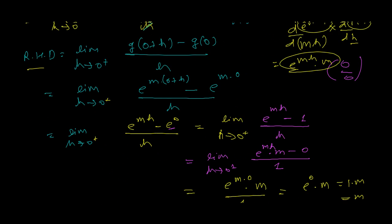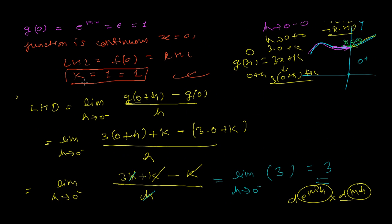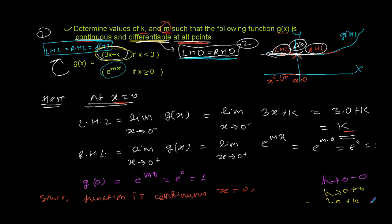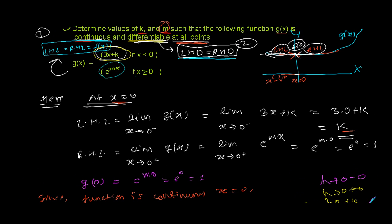Since g(x) is differentiable at x equals zero, left-hand derivative must equal right-hand derivative. Left-hand derivative is 3 and right-hand derivative is m, so m equals 3. Therefore k equals 1 and m equals 3. Whenever you have unknown terms, equate left-hand limit, right-hand limit, and functional value for continuity, and equate left-hand and right-hand derivatives for differentiability.